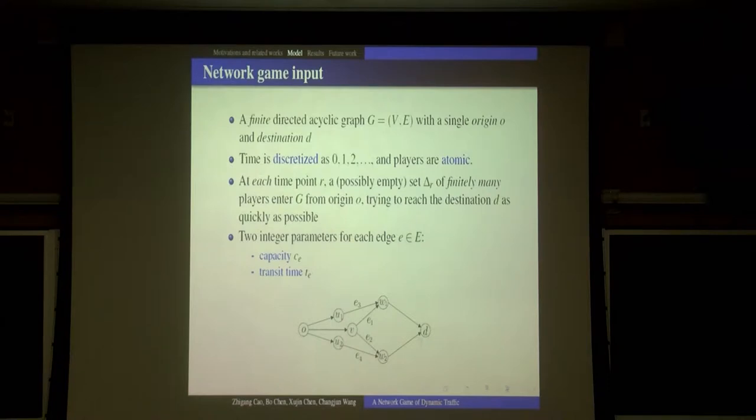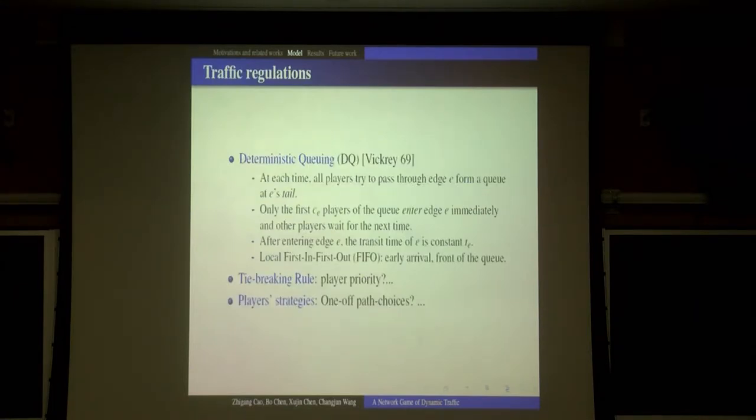For each edge, there are two integer parameters: capacity C_E and transit time T_E. This kind of model belongs to the so-called deterministic queue model, which was introduced by Vickery in 1969.